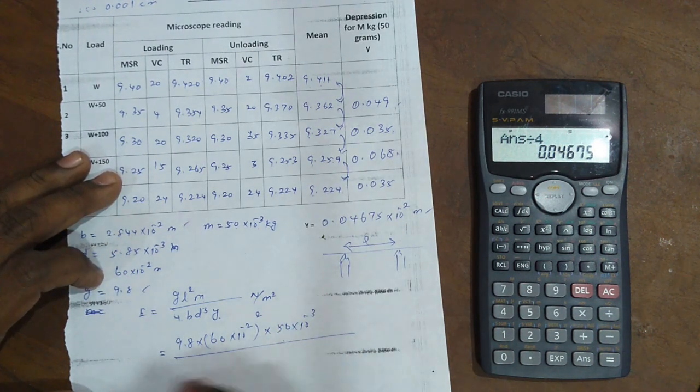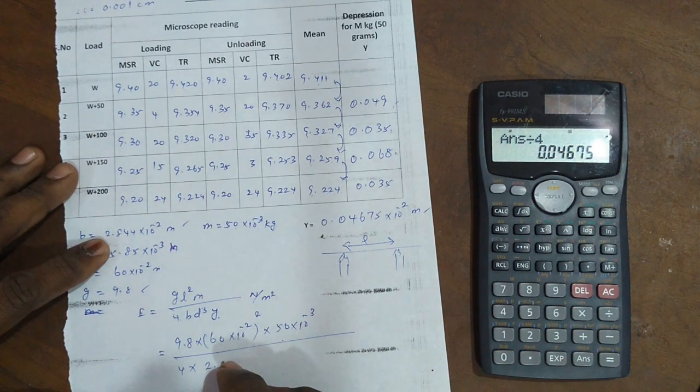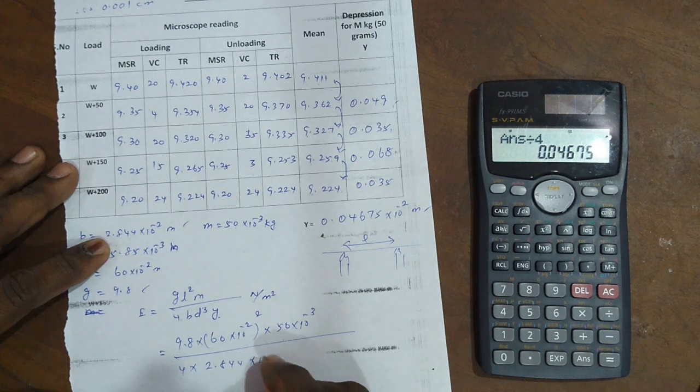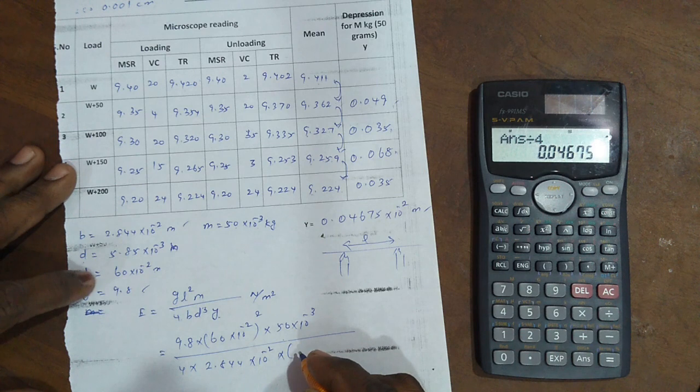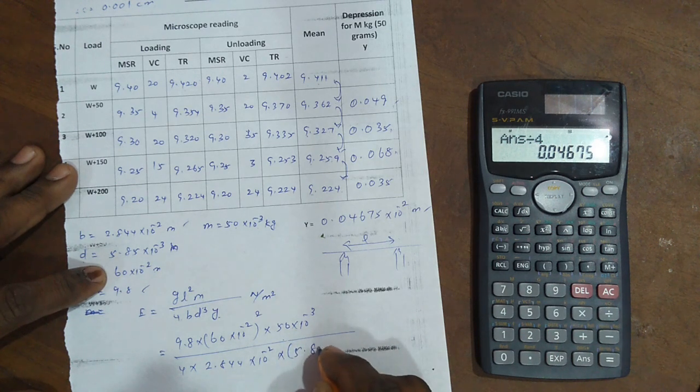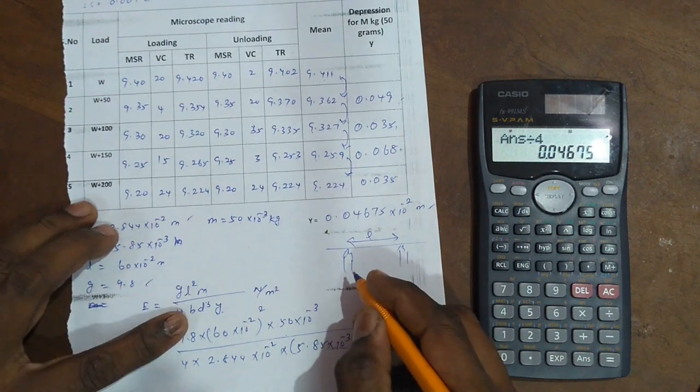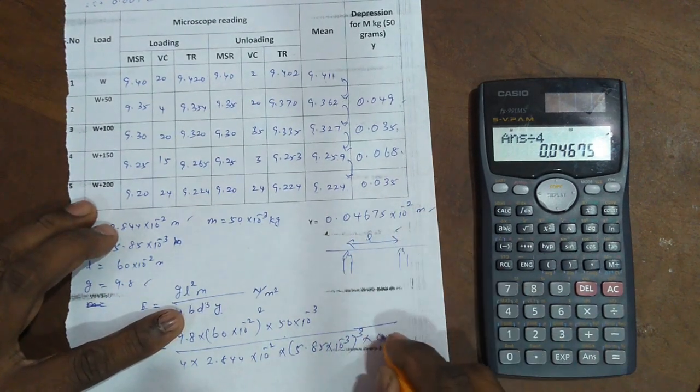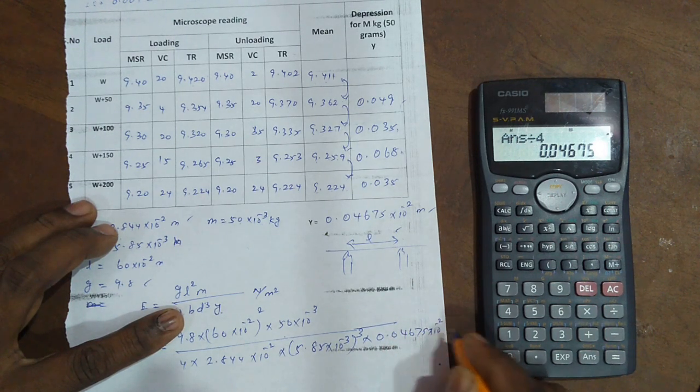Divide by 4 into b. b is breadth: 2.844 times 10 to the power minus 2 meters into d. d cubed value is 5.85 into 10 to the power minus 3 whole cubed into y. y value is 0.04675 into 10 to the power minus 2 meters.